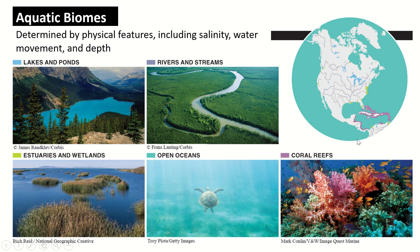Aquatic biomes are water-based and differ depending on whether the water is salt or fresh water, how much the water moves, and how deep the water is. Most of the earth is covered by open ocean — deep, salt water, though depths vary considerably. Where oceans meet rivers, you see estuaries and wetlands with a mixture of salt and fresh water. Coral reefs tend to congregate around the equator in shallow waters and are areas of very high biodiversity. Rivers and streams are moving fresh water, and lakes and ponds are more still fresh water.